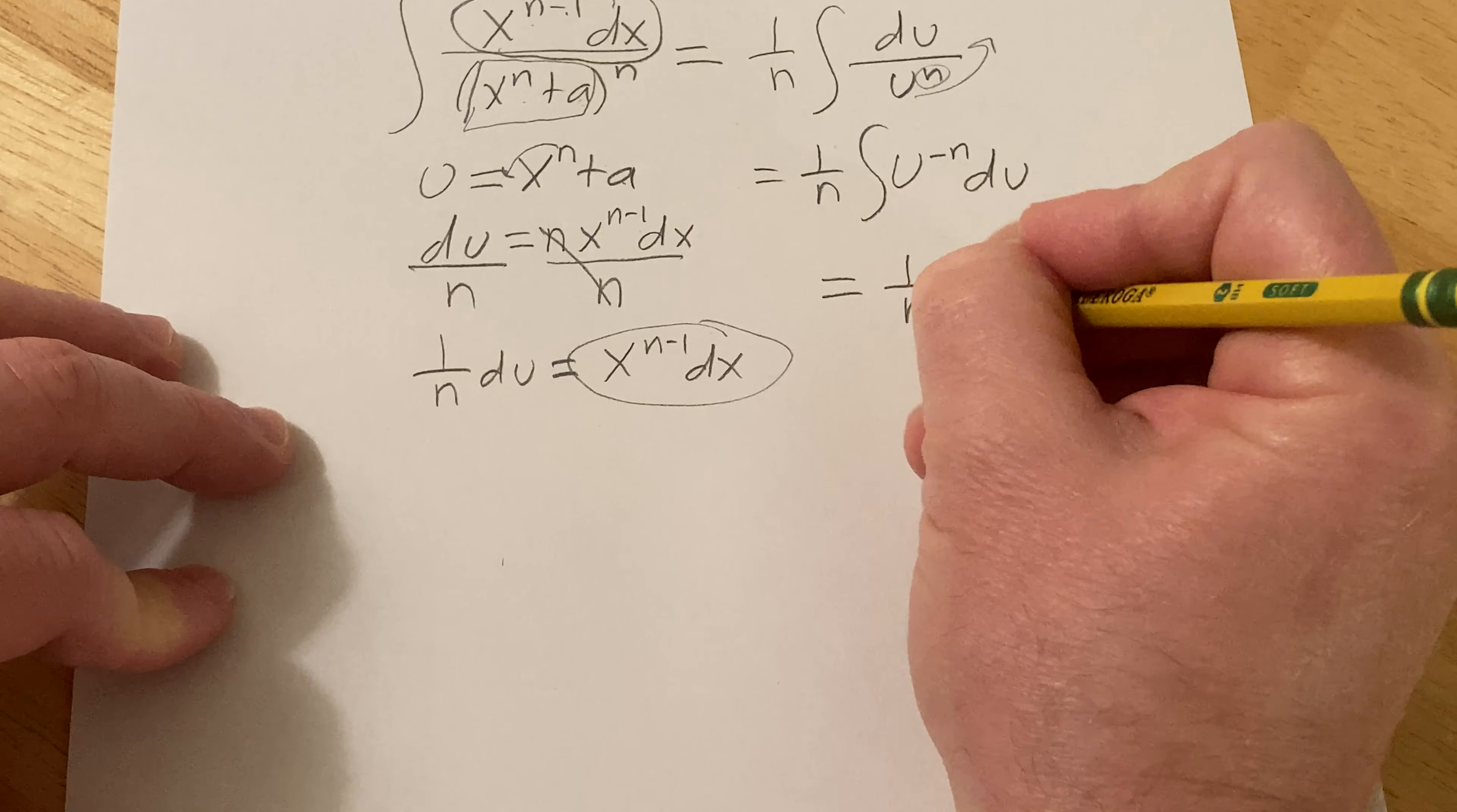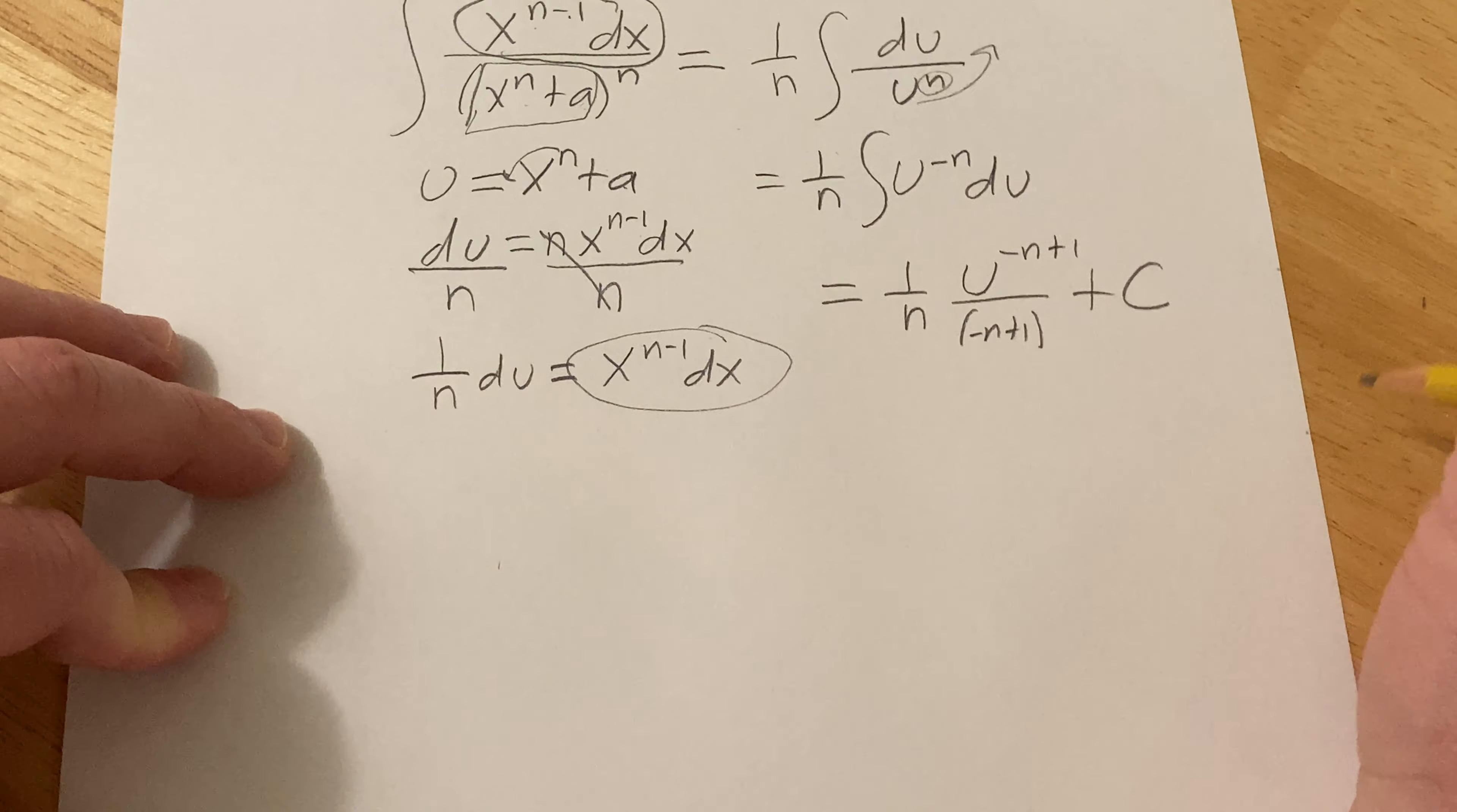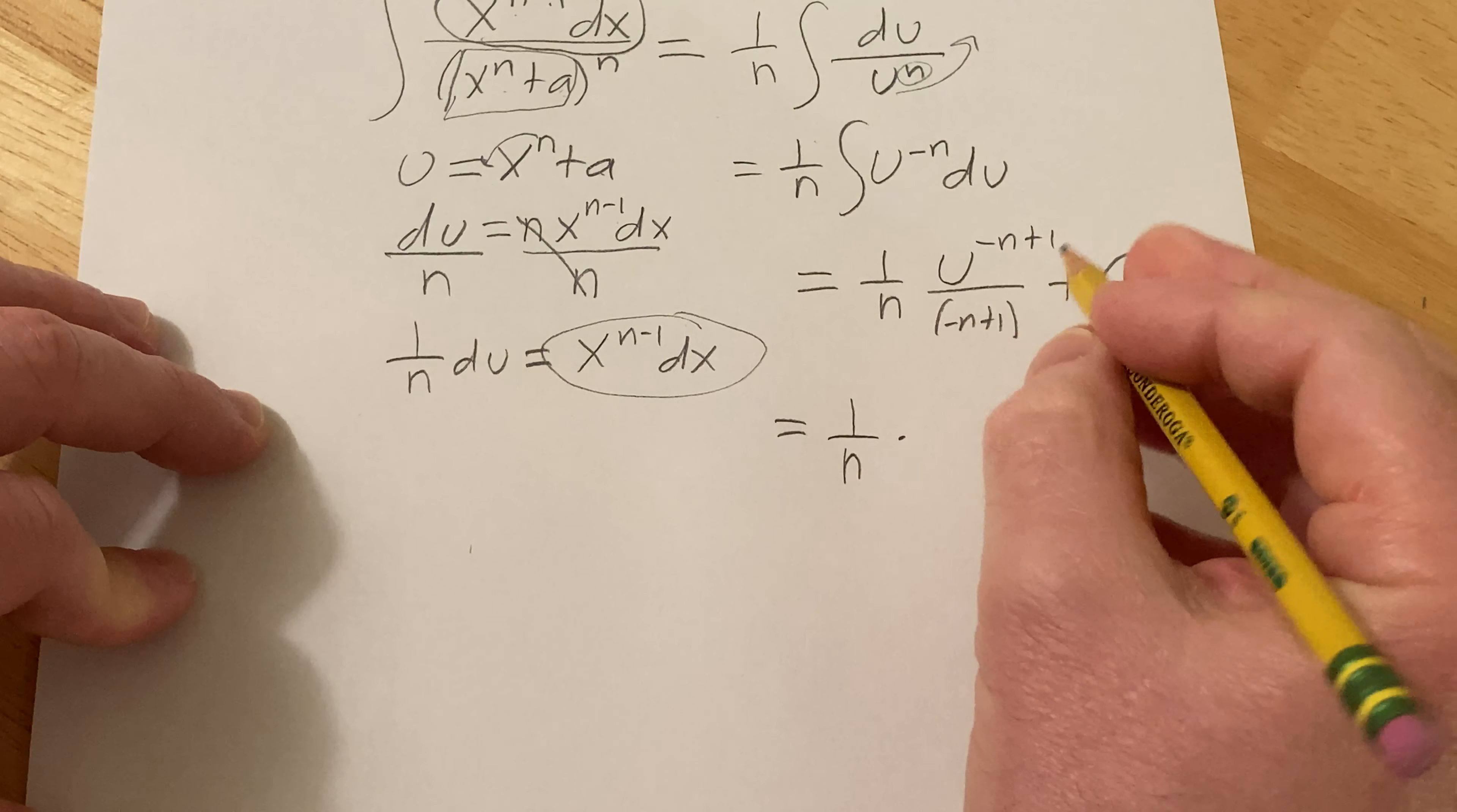Now we can integrate 1 over n and what you do is you add 1 to the exponent. So it's u to the negative n plus 1 over negative n plus 1 plus our constant. So it's equal to 1 over n times and then when you bring this down it changes the sign.